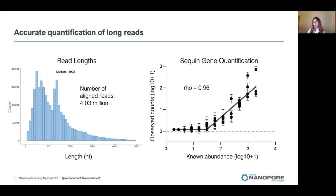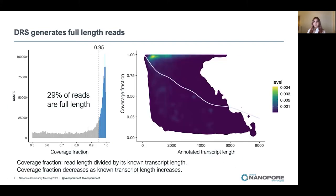We also checked what percentage of our reads covered the entire length of their annotated transcripts. We defined this — known as coverage fraction — as the read's alignment length divided by the known transcript length to which that read aligned. We chose a minimum coverage fraction of 0.95 for a read to be classed as full length, and found that 29% of our reads met this threshold, with a median coverage fraction of 0.74.